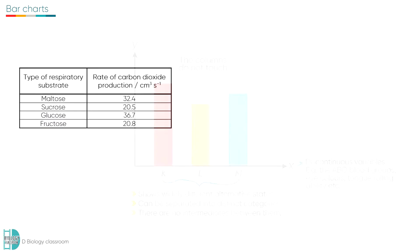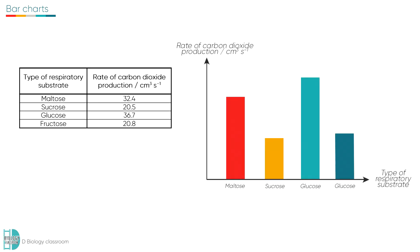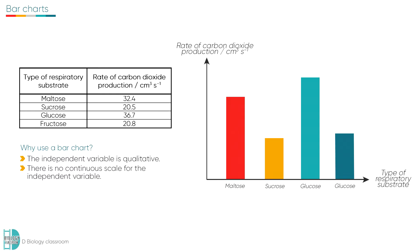For example, this table shows you the rate of respiration of yeast when given different substrates. Bar charts should be used since the independent variable is qualitative — there is no continuous scale for the independent variable. The dependent variable is continuous, as it is the rate of respiration and would be measured as the rate of carbon dioxide production.